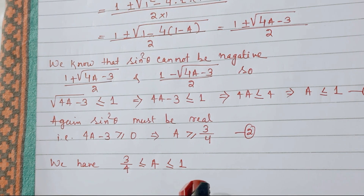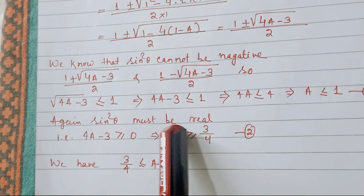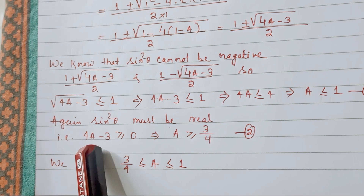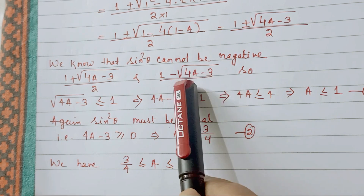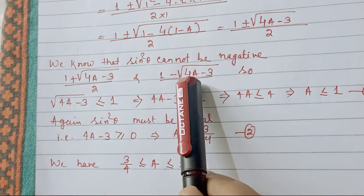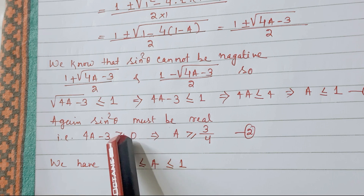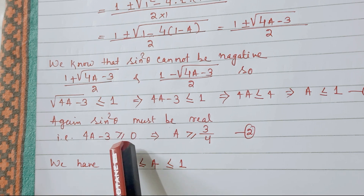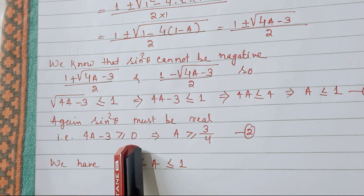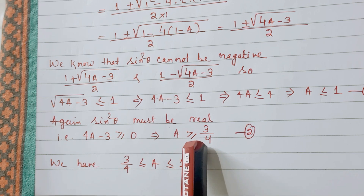For the second inequality, sin²θ must be a real number. The expression under the square root, 4A − 3, cannot be negative, so 4A − 3 ≥ 0, which implies A ≥ 3/4.